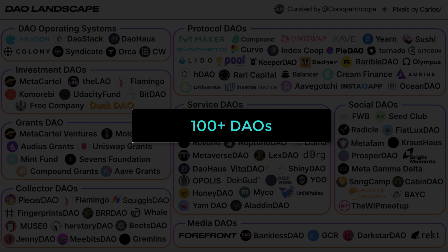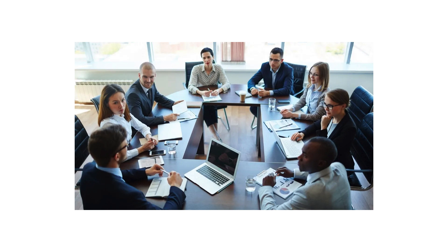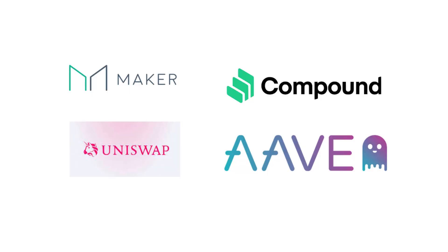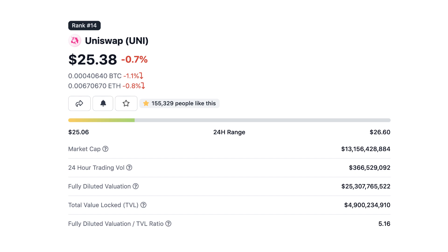There are generally more than 100 DAOs. The biggest use case is for governance of DeFi protocols — this can be seen as a crypto version of a board of directors. Protocols like Maker, Uniswap, Compound, or Aave all have a DAO. This kind of DAO is used to vote on how to use the treasury, on the evolution of the protocol, and on protocol parameters. To participate in a governance DAO, you need to have governance tokens.